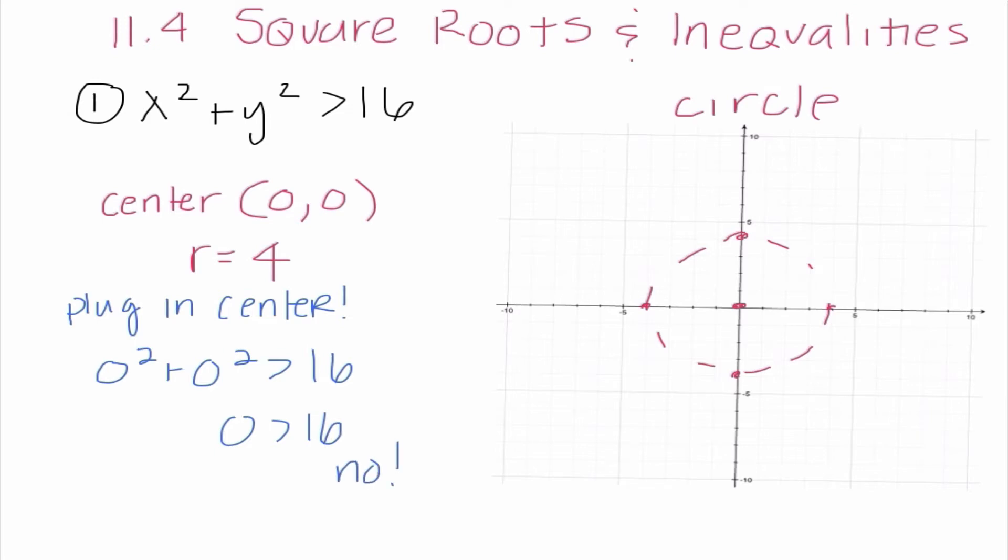So what that means is that our solutions in here are not solutions at all. I should say these points in here are not solutions. Everything outside the circle makes a true statement. So I'm going to go ahead and shade everything outside the circle. And I think this is pretty evident where our solutions are going to be. Now, if I really wanted to make sure, I could choose one of these ordered pairs like (5,0), substitute it in, and it will make a true statement.